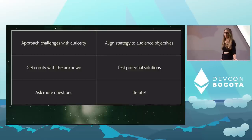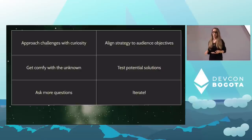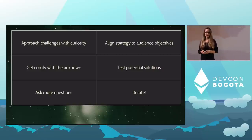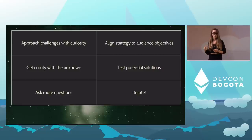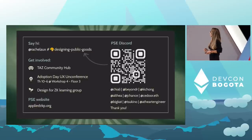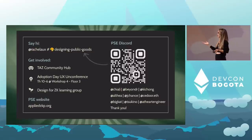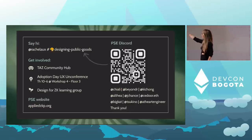If we want to see privacy normalized and made accessible to everyone, we must continue to collaboratively design — people from all kinds of technical backgrounds approaching challenges with curiosity, getting comfortable spending time with the unknown, aligning strategy to audience objectives, testing potential solutions, and iterating the work. I want to thank my team members who helped me collaboratively with this presentation.